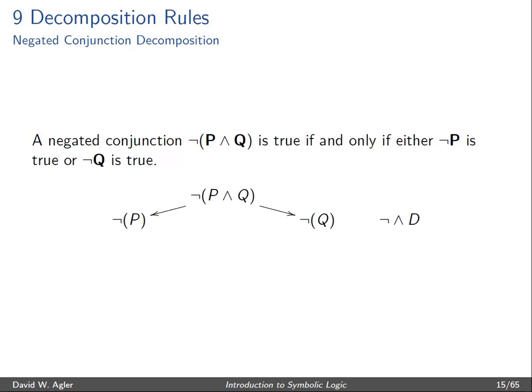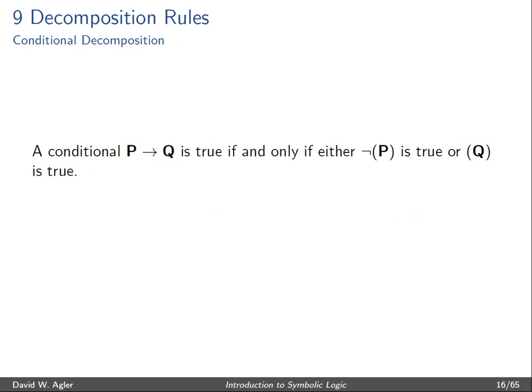And so we'll illustrate not P wedge Q as being true if either not P is true or not Q is true, and the branching scenario suggests that both of these can also be the case. A conditional is true if and only if either not P is true or Q is true, so this gives us three possible scenarios under which a conditional can be true.